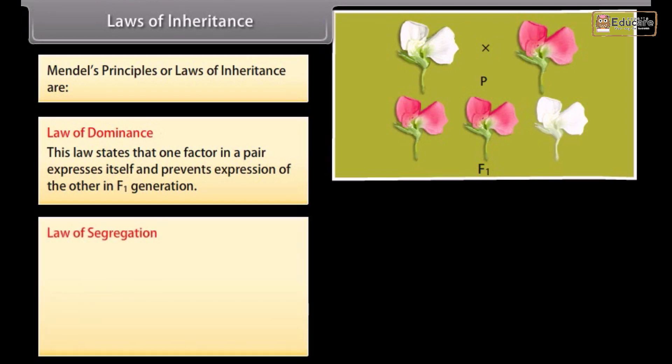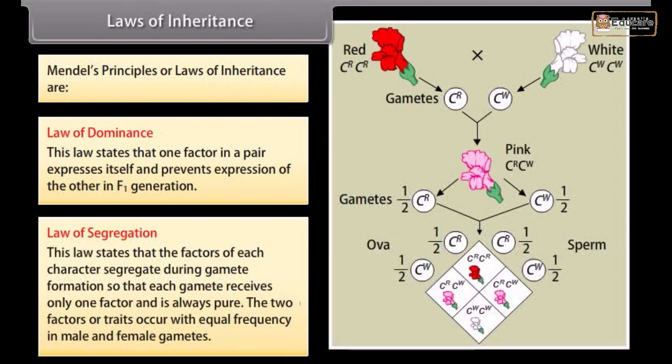Law of segregation. This law states that the factors of each character segregate during gamete formation so that each gamete receives only one factor and is always pure. The two factors and traits occur with equal frequency in male and female gametes.